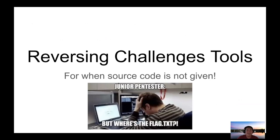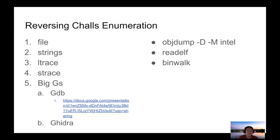Now we're going to go over reverse engineering challenge tools — that's the RE challenges from last Tuesday. This is specifically challenging because you don't get source code, just the binary — no .c file to look at. These are the tools I always run on reversing challenges. The first five are what I normally run for enumeration. The first thing I always run is file, because it will tell you what kind of executable it is — Linux-based, 32-bit, or 64-bit.